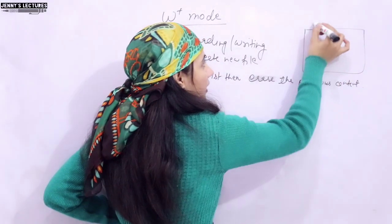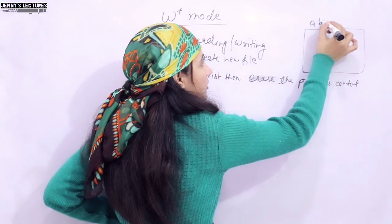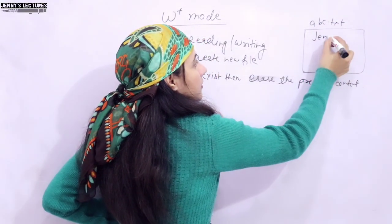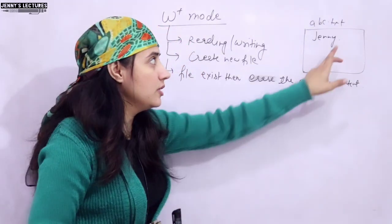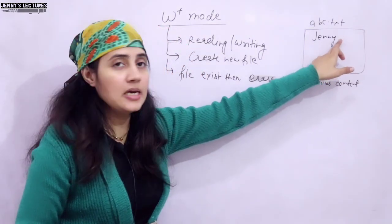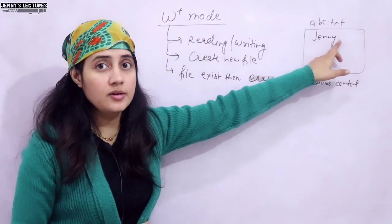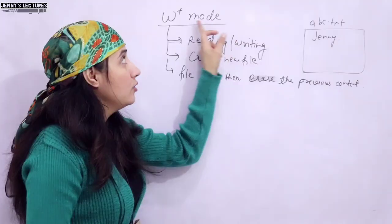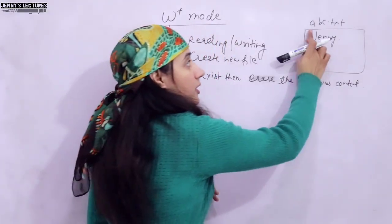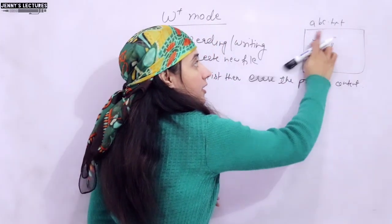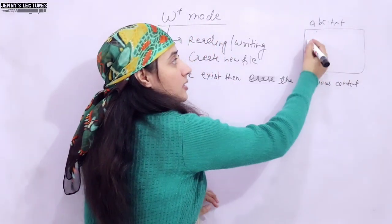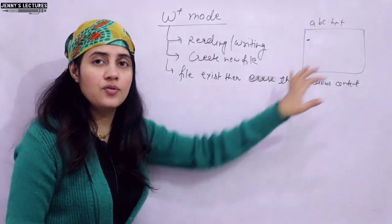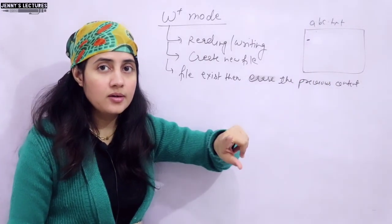Suppose this is my file, abc.txt, and in this file I have 'Jenny'. Now the cursor is at the last position. If the file exists and you open this file in W plus mode, then 'Jenny' would be erased — the content would be erased — and the cursor would be at the starting only. Now the file length is 0.